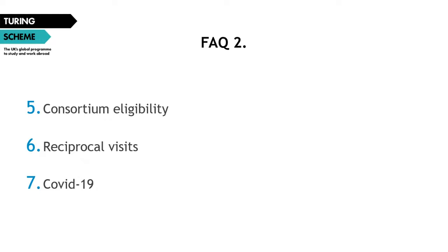Regarding consortiums: each unique consortium is allowed to submit a single application, though any organization within the consortium may also submit an individual application separately. They must consist of at least two organizations, one of which must be a school or college that delivers FE and VET. These schools or colleges must be officially registered or recognized within the UK constituent country in which they are based. There is no specific eligibility placed on the applicant organization so long as they're working with a school or college, though they would still be subject to financial capacity checks.